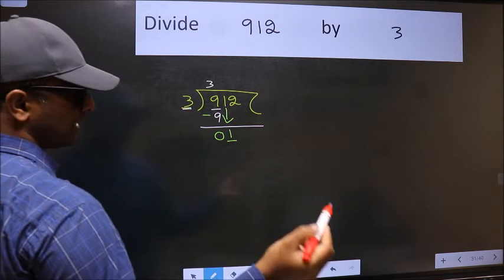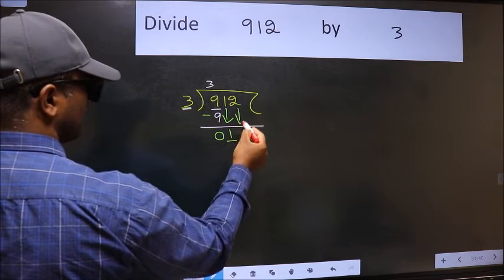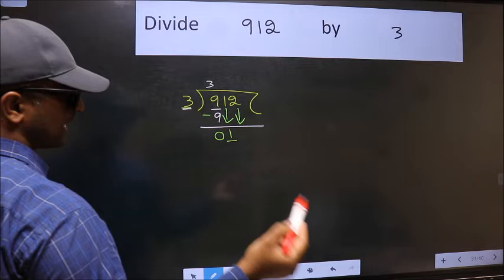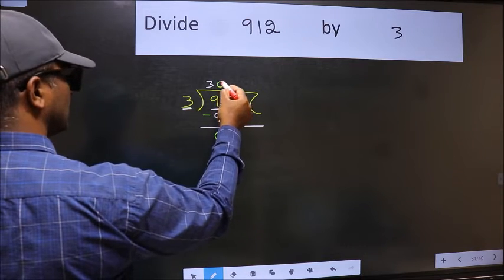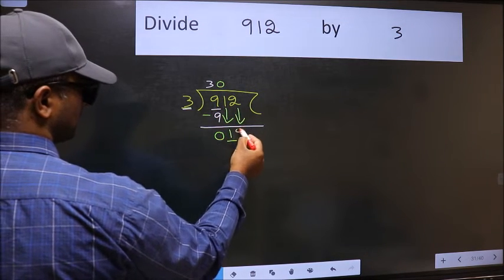So we should bring down the second number. And the rule to bring down the second number is we should put 0 here. Then only we can bring down this number.